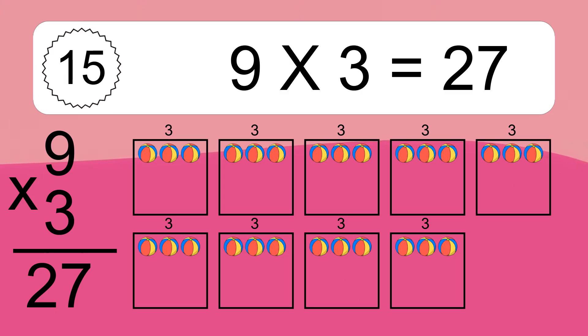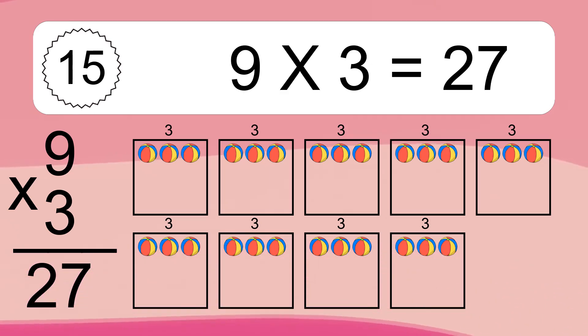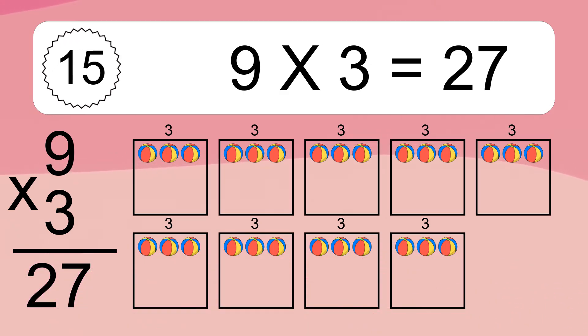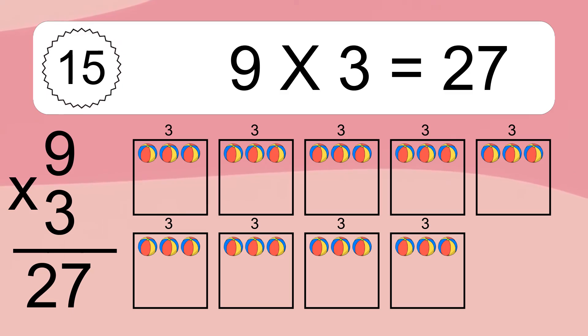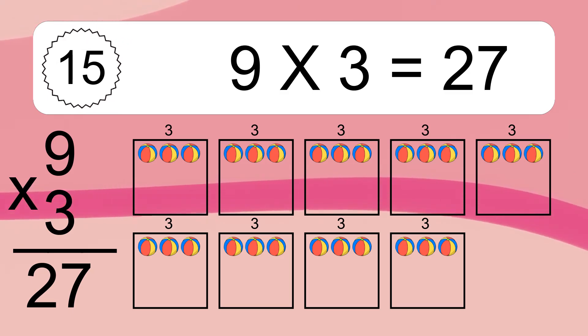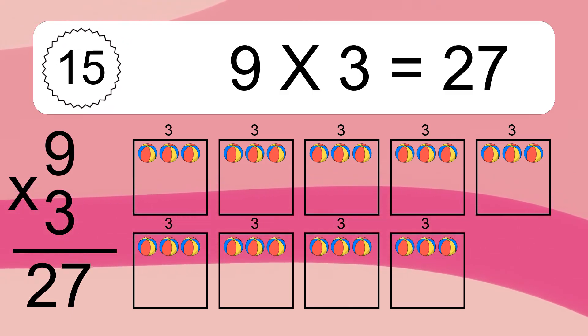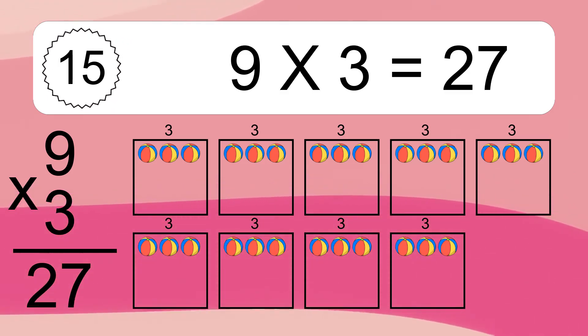9 times 3 equals what? We have 9 boxes and each box has 3 colorful balls inside. If you count all the balls in all the boxes together, you will have 9 times 3 balls. This equals 27 balls.